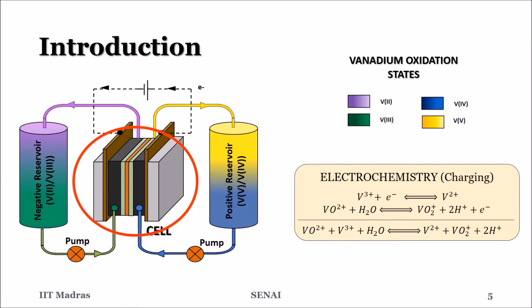The protons produced move through the membrane to the negative electrode. The electrons move through the external circuit to the negative electrode. The electrolytes are continuously circulated through the cell during operation.